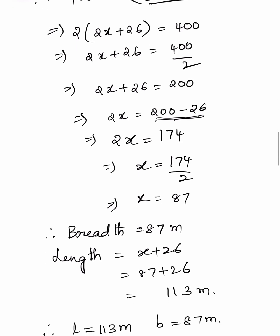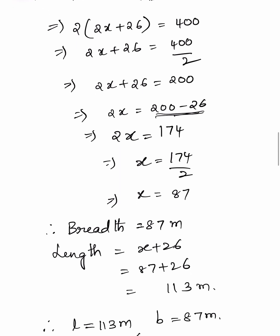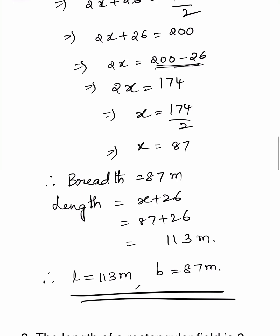Therefore, the breadth is 87 meters. Length equals x plus 26, so 87 plus 26 equals 113 meters. Therefore, the length is 113 meters and the breadth is 87 meters.